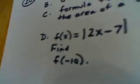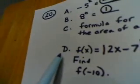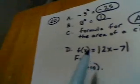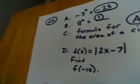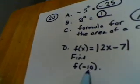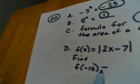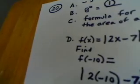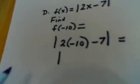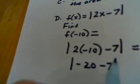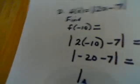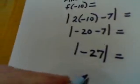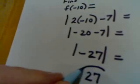Alright, our last part of this question is look at example D, or question part D. We're given the function f of x is equal to the absolute value of 2x minus 7, and we're asked to find f of negative 10. So we're putting negative 10 into this function in the place of x. So f of negative 10 is equal to the absolute value of 2 times negative 10 minus 7, which is equal to the absolute value of negative 20 minus 7, which is equal to the absolute value of negative 27. And the absolute value of negative 27 is a positive 27.